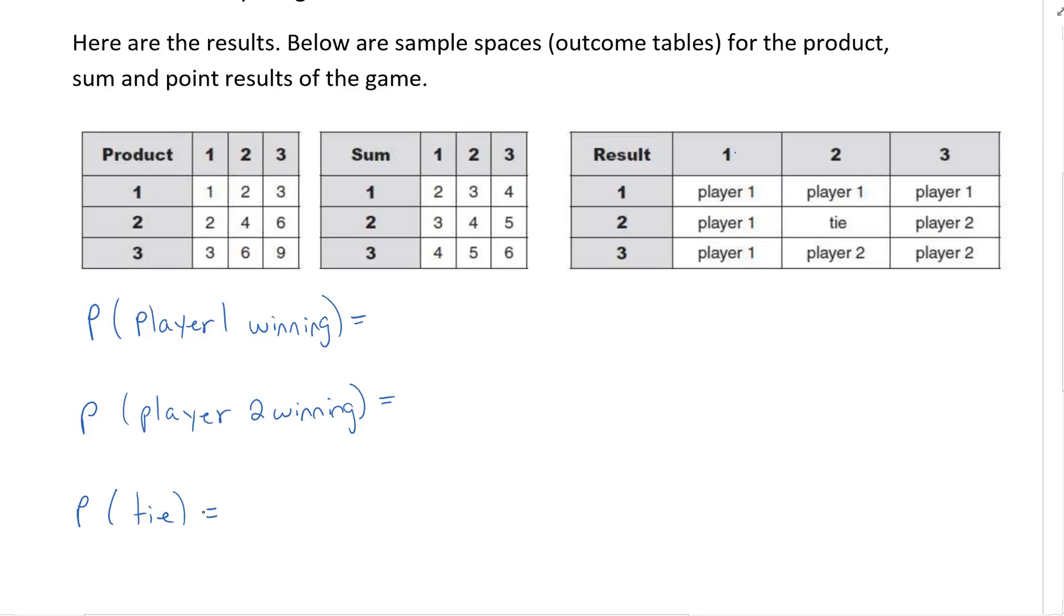So probability of player one winning, we can see if this is our sample space. Player one wins one, two, three, four, five times. So that would be five out of how many? We've got a total of nine different outcomes. And then player two winning would be three out of nine. And then a tie is our last one here and that would be one out of nine.